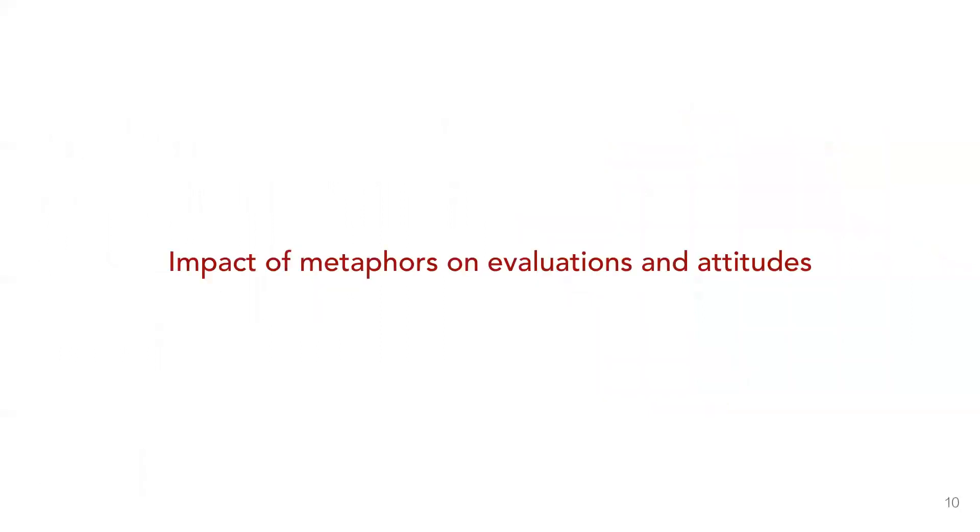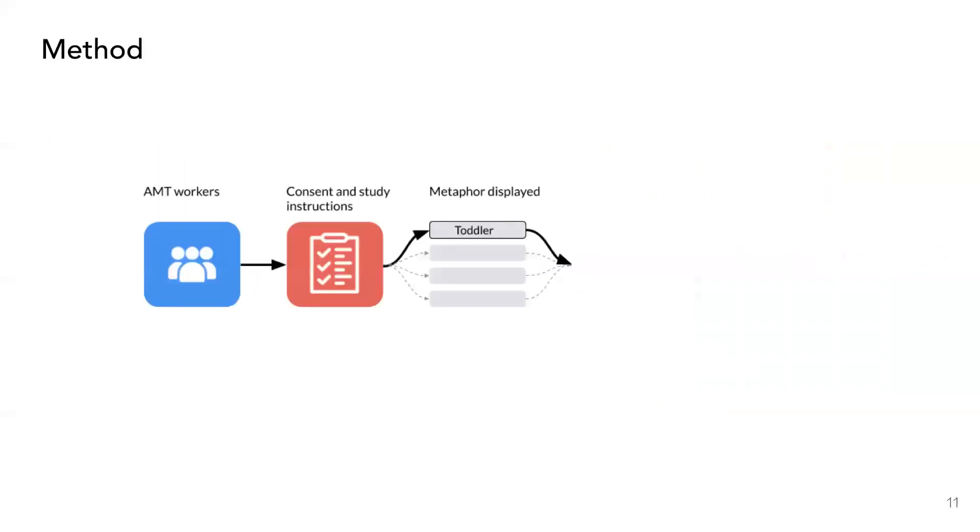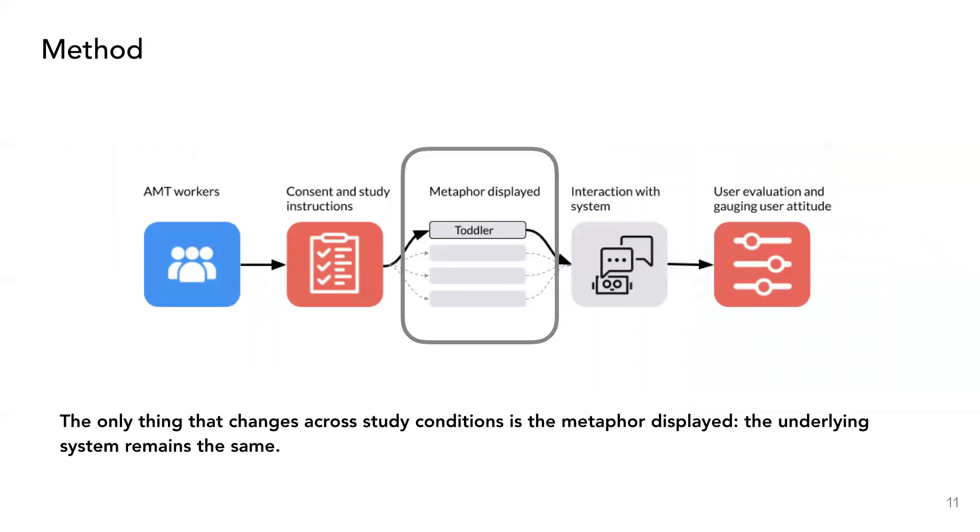Our first study explores how the warmth and competence projected by the metaphor affect user evaluations and user attitudes. In this study, participants are introduced to a conversational AI system using a metaphor, and this metaphor varies depending on the study condition they are assigned to. After this, they complete a task using the system, and we measure their attitudes and evaluation. The only thing that changes across study conditions is the metaphor displayed. The underlying system remains the same.